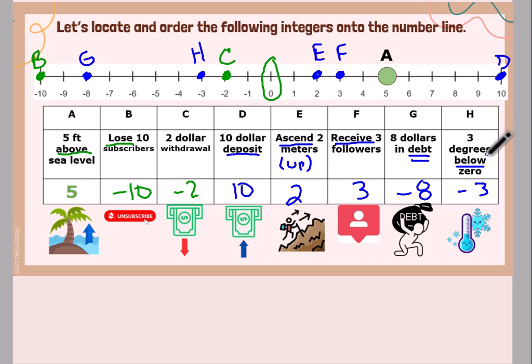And then the last one, 3 degrees below 0. Below means it's a negative 3. Here's my negative 3. Point H. Okay, how did you do?